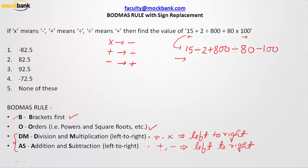To make the rule clear: number one, solve brackets first; number two, solve orders; third, solve division and multiplication; and the last rank goes to addition and subtraction. In our current problem, there are no brackets and no powers — only division, multiplication, addition, and subtraction. We will move from left to right.